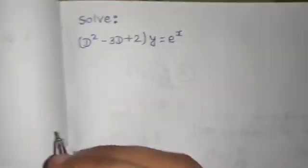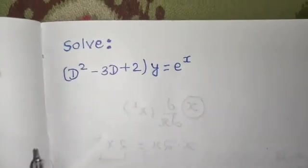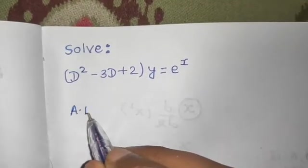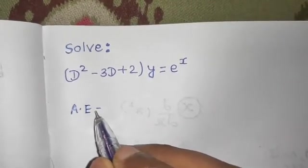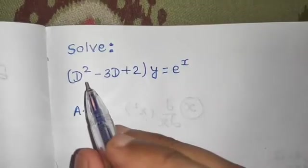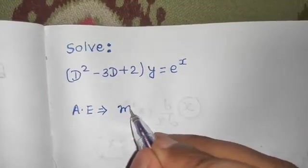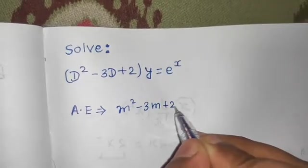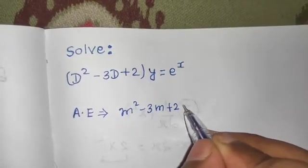So as usual, the first step always is to find your auxiliary equation. So how to find your auxiliary equation? Just replace this D by m, so you will get m² - 3m + 2 and equate it to 0.